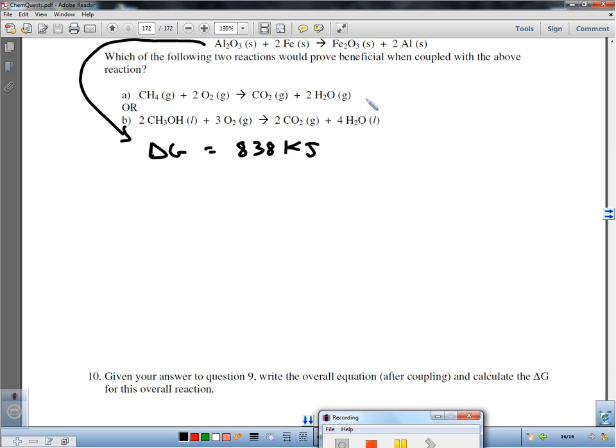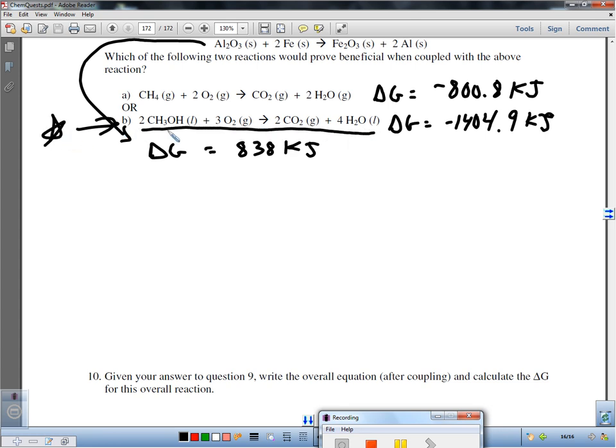But, if we couple that with one of these other two reactions, the question is, which one would be valuable? Well, if we figure out the delta G, which I hope you've done, if I figure out the delta G here, it's negative 800.8 kilojoules. Again, might be slightly off from what your book is giving you. And this one is negative 1404.9 kilojoules. Alright. So, if I add two reactions together, positive 838 and negative 800, I still don't get a negative number. However, if I add this one, put a star on it, let's underline it. And if I combine this one and this one, I could get an overall delta G that is negative if I couple those two together. And that is cause for celebration. Alright. What would be the overall reaction by coupling those two together?